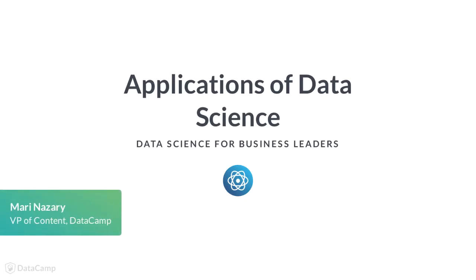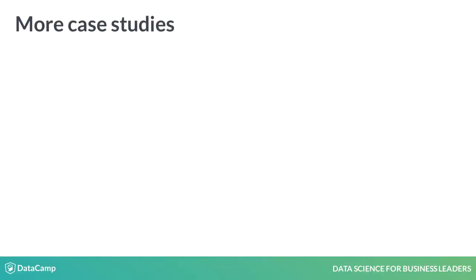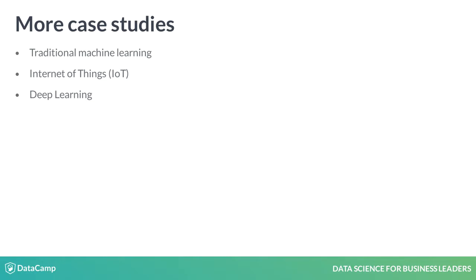Previously, you learned the definition of data science and the steps in a data science workflow. In this lesson, you'll learn how to apply data science to real business problems. Let's take a deep dive into three exciting areas of data science: traditional machine learning, the Internet of Things, and deep learning.